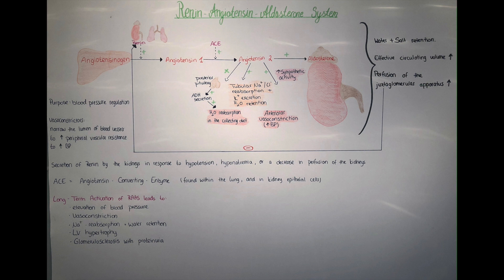The renin-angiotensin-aldosterone system acts upon these signals by producing several intermediates in different parts of the body, which react with each other to convert angiotensinogen — a precursor molecule — through a couple of steps to produce a powerful vasoconstrictor called angiotensin-2. Vasoconstrictors narrow the lumen of blood vessels to effectively increase peripheral vascular resistance and thereby increase blood pressure.